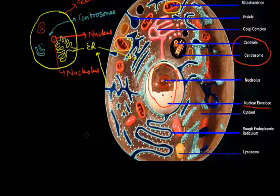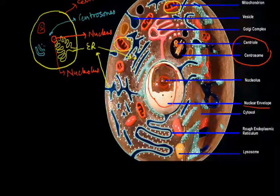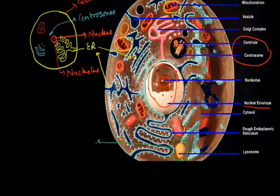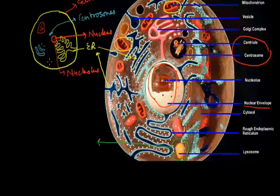Another important structure present in the animal cell is the lysosomes. Lysosomes are the waste disposal system of the cell — they are responsible for the decomposition of waste material inside the cell.